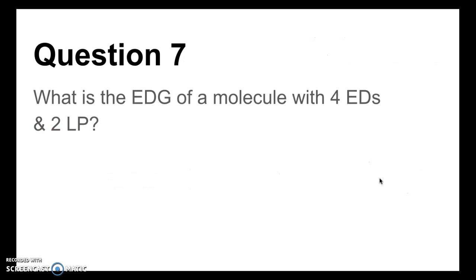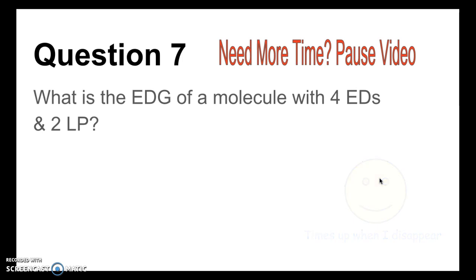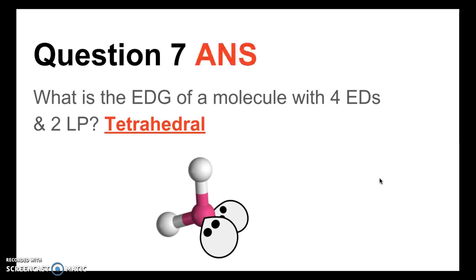Moving on to question 7: What is the electron domain geometry of a molecule with four electron domains and two lone pairs? The answer is tetrahedral. Hopefully you didn't fall for the trick this time. Remember, for electron domain geometry, you ignore the number of lone pairs and just focus on the number of electron domains. Here we have four electron domains, so the answer is tetrahedral.